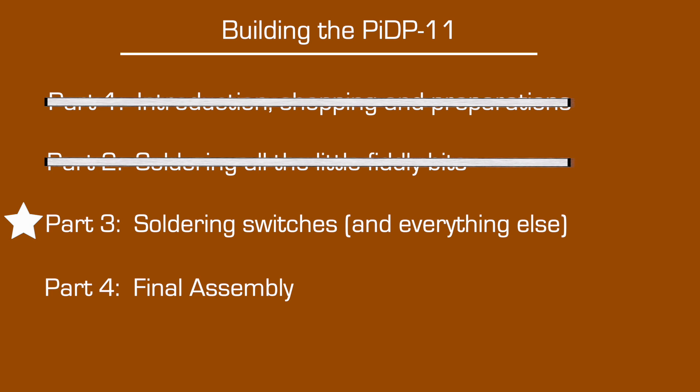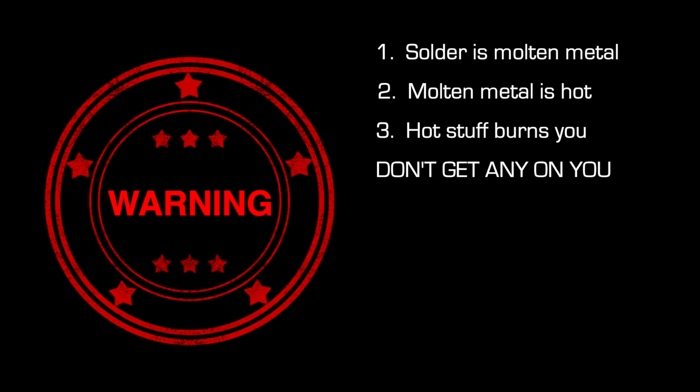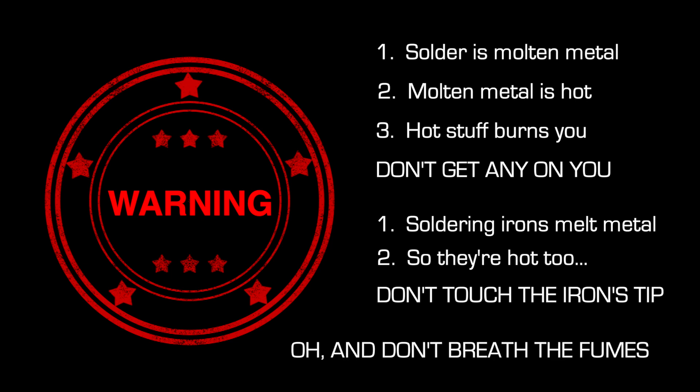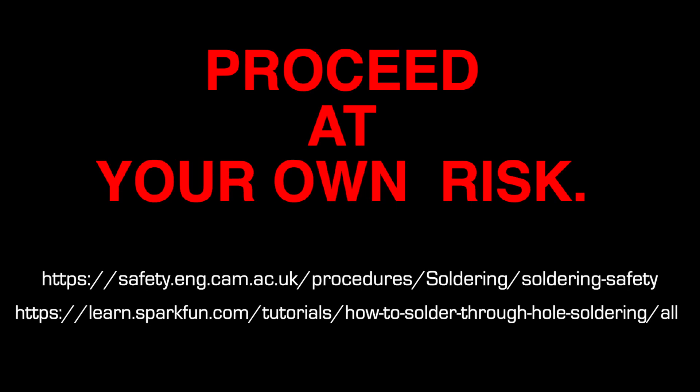We're going a little out of sequence from Oscar's build instructions. I want to finish up the rest of the soldering first. Quick reminder: soldering involves molten metal, hot irons, and noxious vapors. A kit like this assumes that you have some basic skill assembling electronics. If in doubt, I've included some links to safety best practices in the description. Do not try any of this at home unless you understand the risks and you've had a bit of practice.